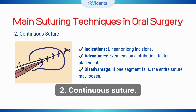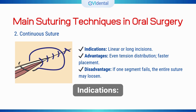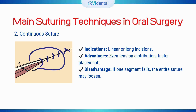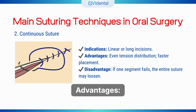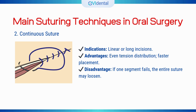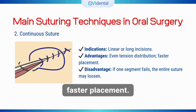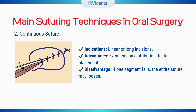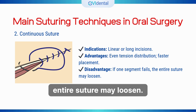2. Continuous suture. Indications: linear or long incisions. Advantages: even tension distribution, faster placement. Disadvantage: if one segment fails, the entire suture may loosen.